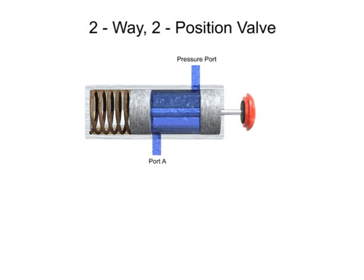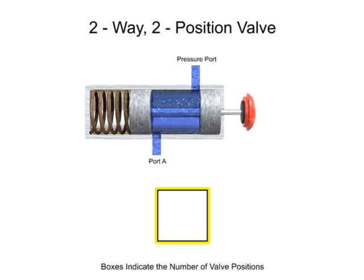To simplify fluid system drawings and schematics, all valves can be represented graphically. Boxes, sometimes called envelopes, are used to indicate the number of valve positions. Since this is a two-position valve, its graphic representation has two adjacent boxes.